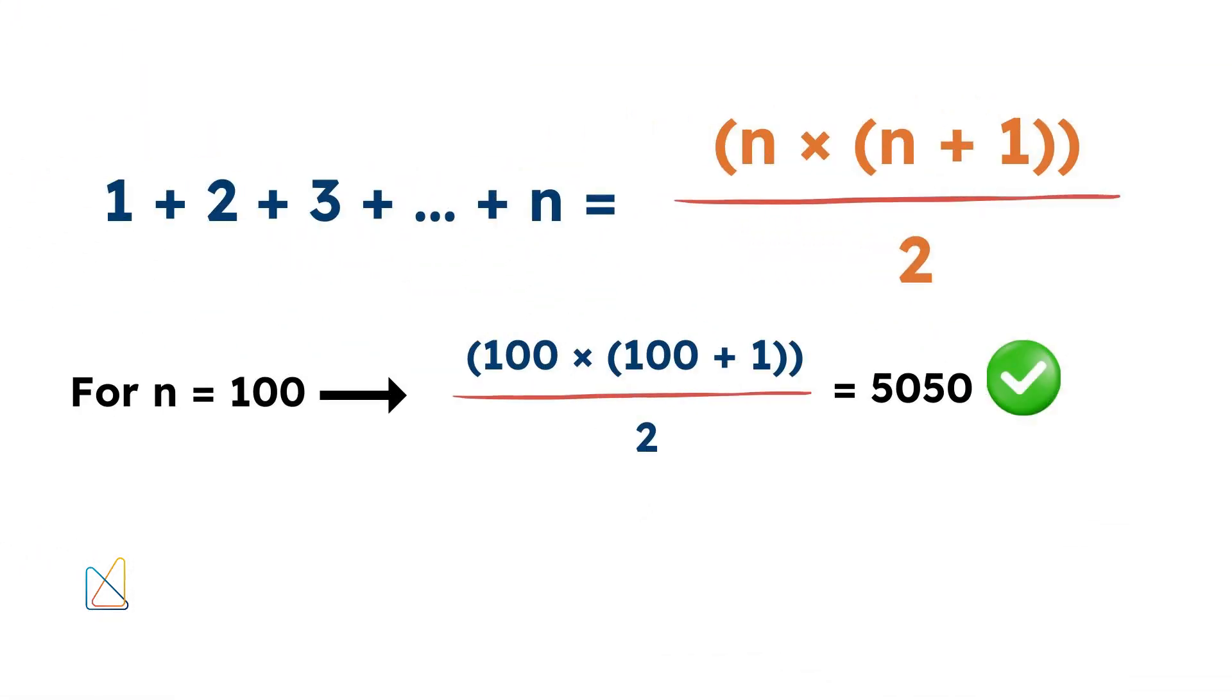For the numbers 1 to 100, we plug in 100 for n, which gives us 100 times 101 divided by 2 is equal to 5,050.